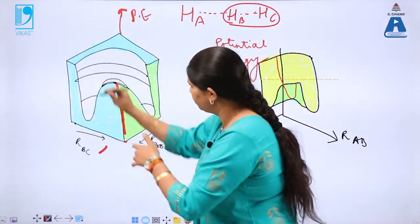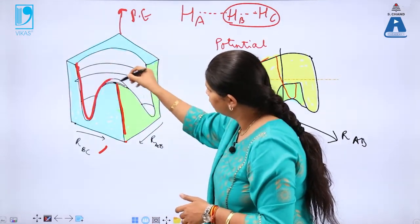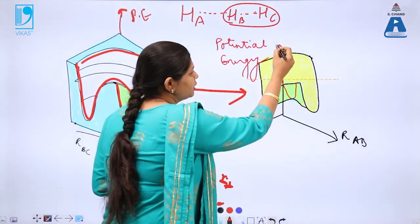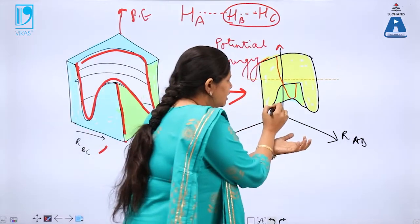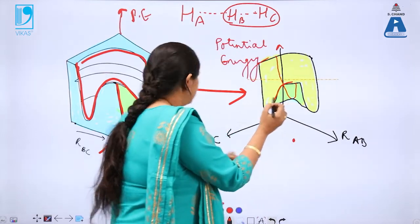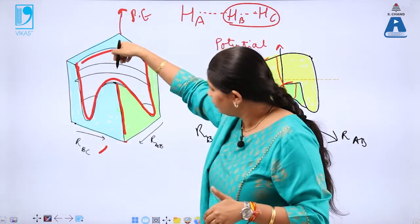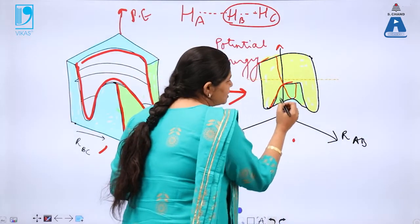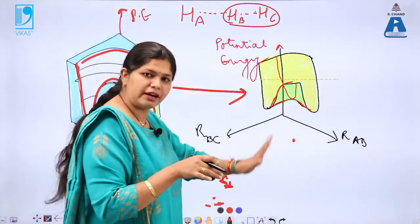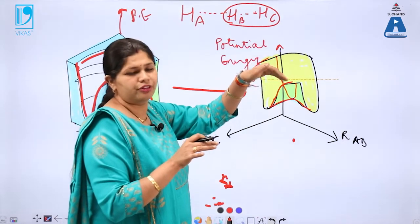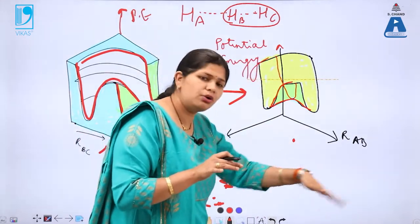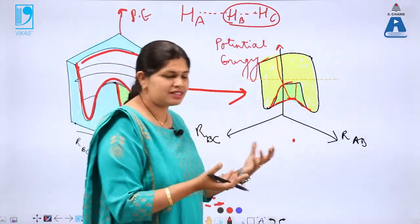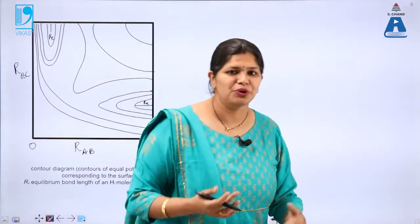We have removed the highlighted blue and green portions and kept only the relevant portion of the diagram. Again you have two axes and the potential energy axis. In this three-dimensional form the saddle is not immediately visible, but it is represented in the diagram as a hill — when you go to the top of the hill and come back to the minima. That particular point is the saddle point.